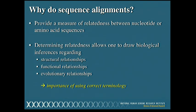So why do sequence alignments? That's what we're going to be talking about for the next 90 minutes. What these sequence alignments allow you to do is figure out some measure of relatedness between two protein sequences or two nucleotide sequences. When you go through the effort of aligning two sequences, you can start to make interesting biological inferences — whether they have a structural relationship to one another, whether their functions are similar, or whether they have a certain evolutionary relationship.